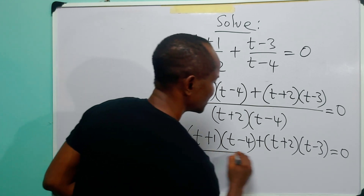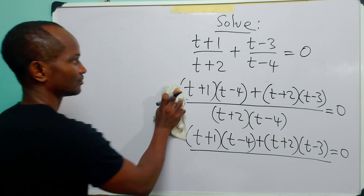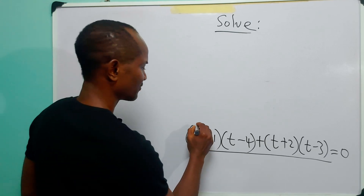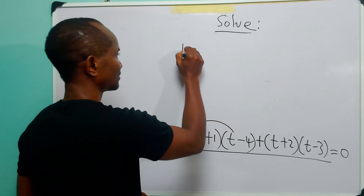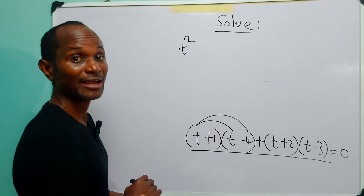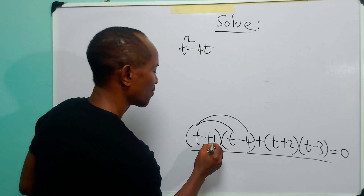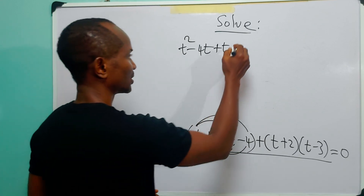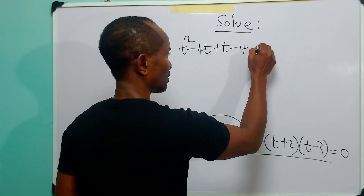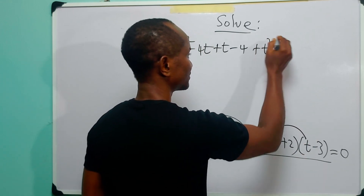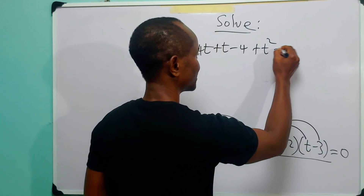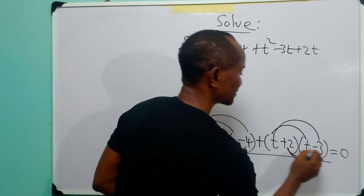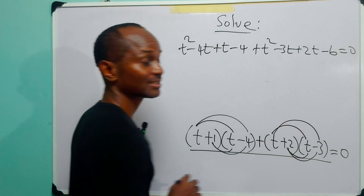Having done this, the next thing is to expand and collect like terms. We have: t×t = t², t×(-4) = -4t, 1×t = +t, and 1×(-4) = -4, plus t×t = t², t×(-3) = -3t, 2×t = +2t, and 2×(-3) = -6. This equals zero.